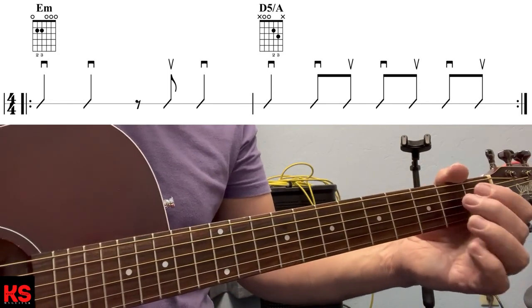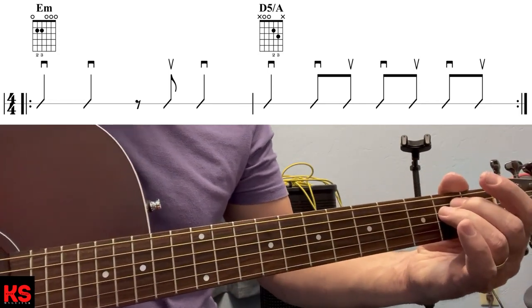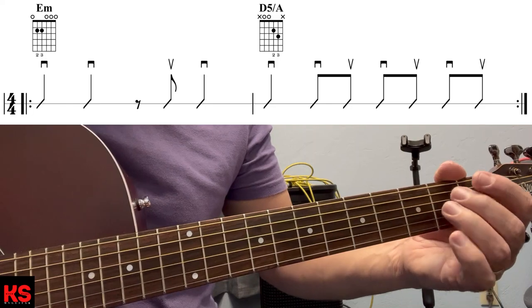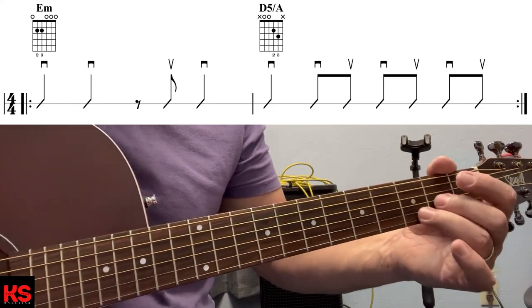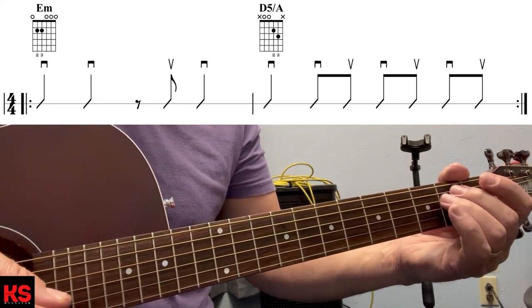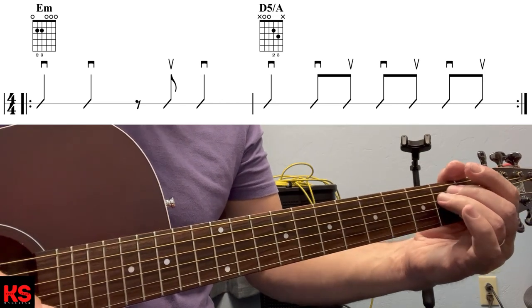Here's number three going from E minor, again, E minor, to the D5. Here we go. Number three. Sounds like this. One, two, three, four.